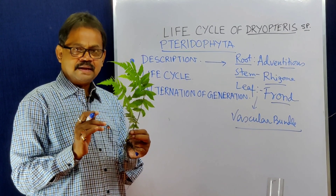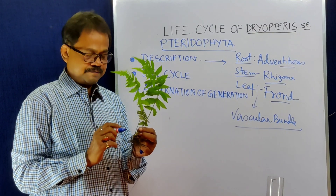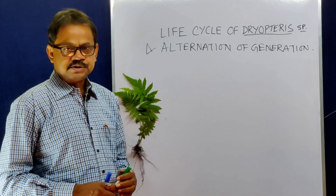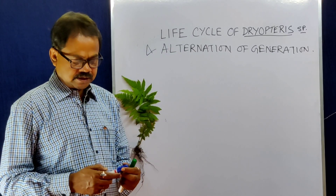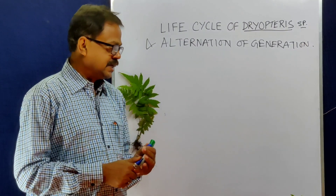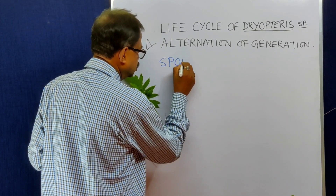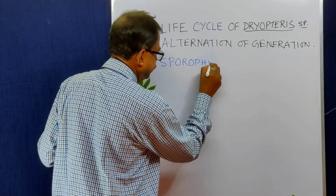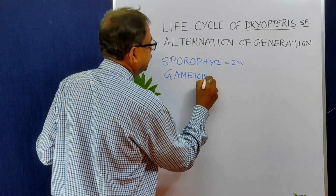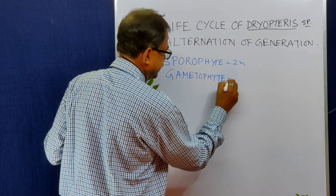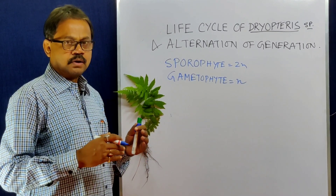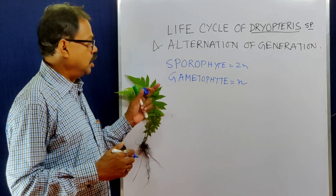Now I am going to describe the life cycle of Dryopteris. This life cycle shows alternation of generation. This plant has two phases in its life cycle: one is the diploid phase called sporophyte, and the other is the haploid phase called gametophyte. This sporophyte phase and gametophyte phase alternate in its life cycle — that is called alternation of generation.